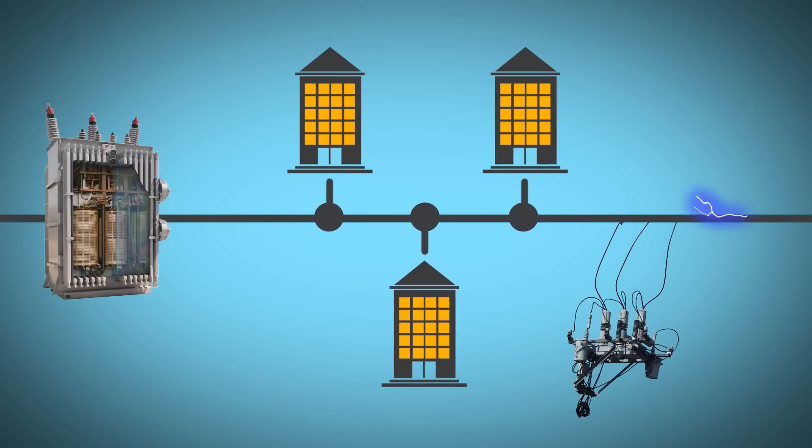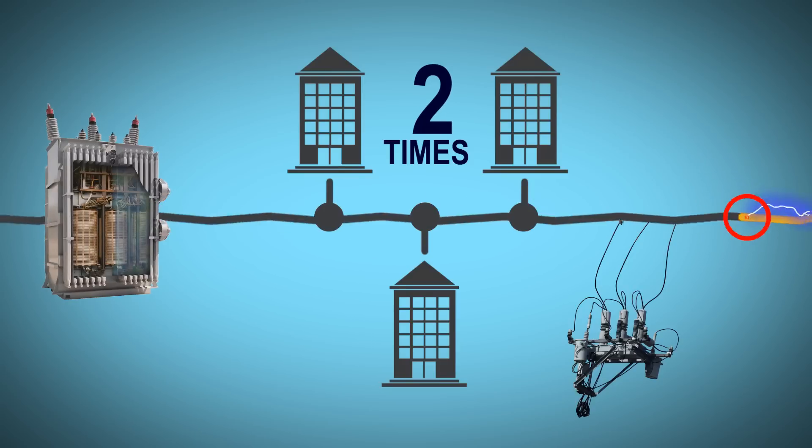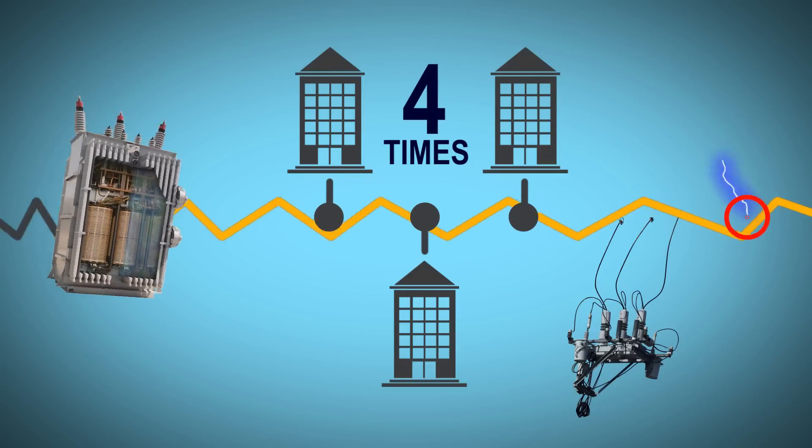reclosing further contributes to overall system reliability issues by putting the full force of the fault back on the distribution system over and over, up to four times.